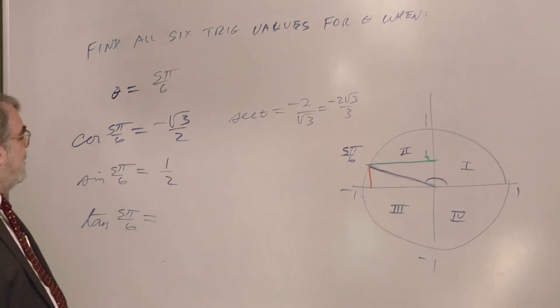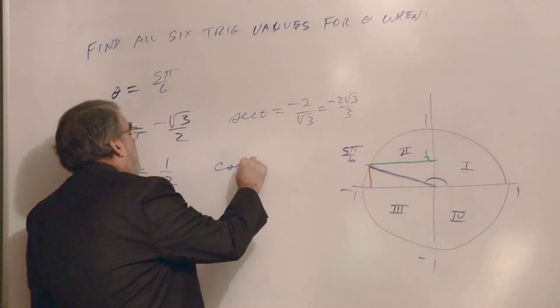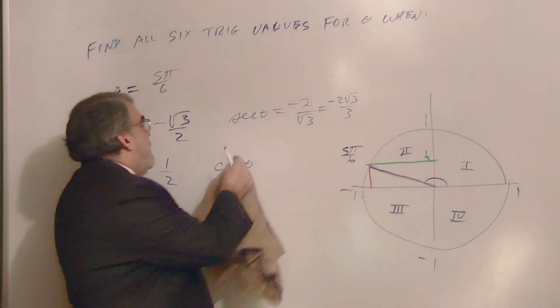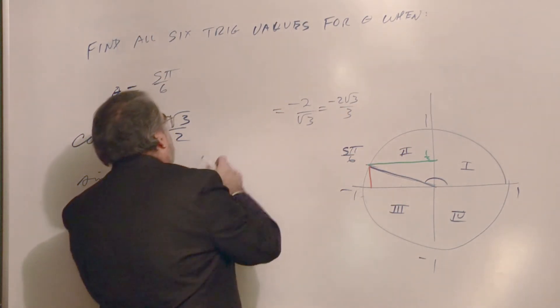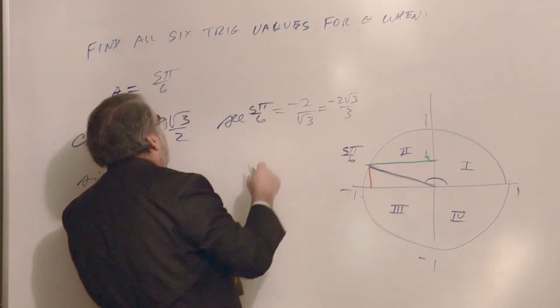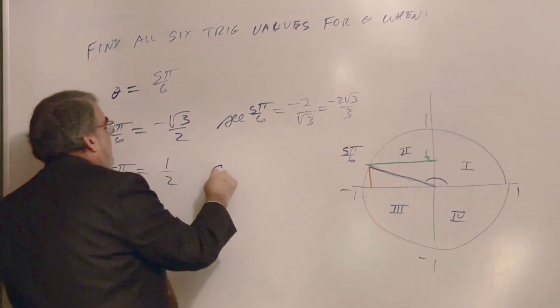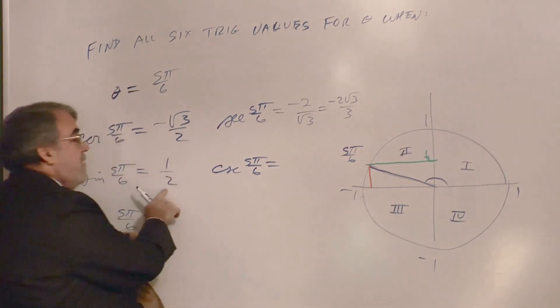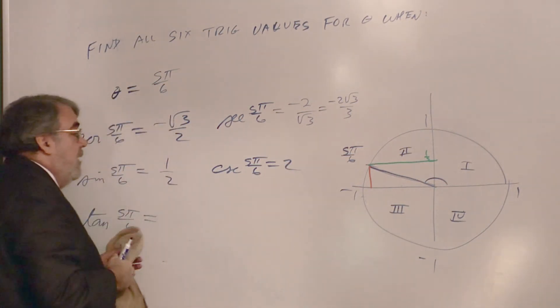Sine is going to be positive in the second quadrant because the y's are positive. And cosecant, then, I told myself I wasn't going to do this. I'm going to put the angle in here. Secant of 5π over 6. Cosecant 5π over 6 is reciprocal of 1 half. That's just plain old 2.